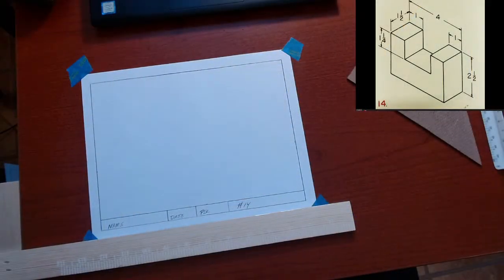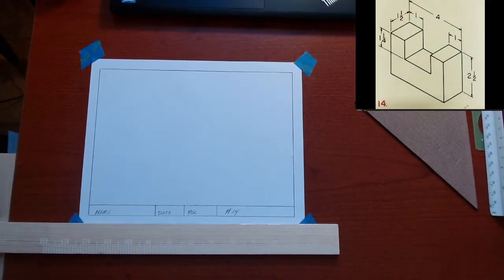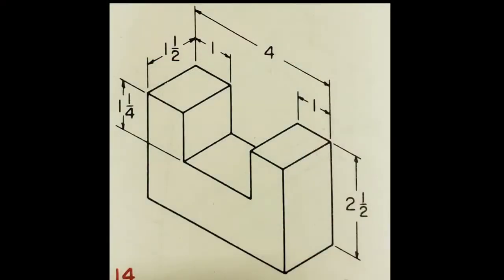All right. Hey, let's get started. This is how to draft number 14. Let me get set up here. All right. So as you can see here, number 14 is basically a box with a notch cut out of the top of it.